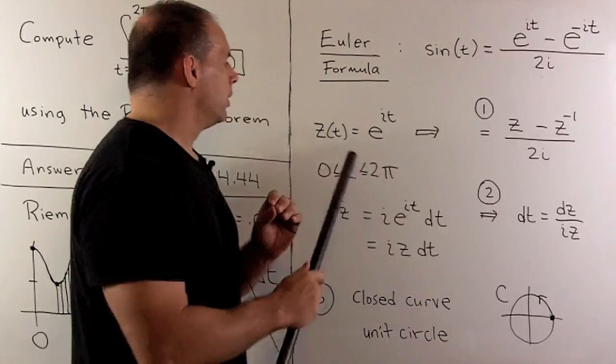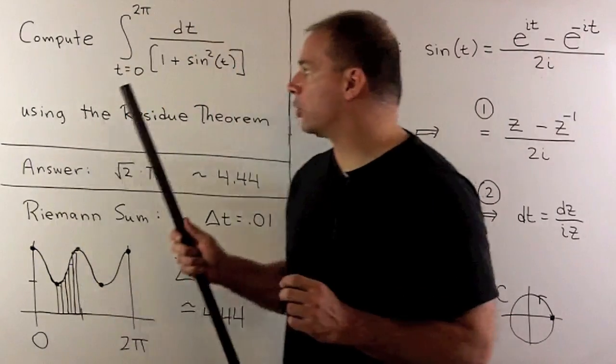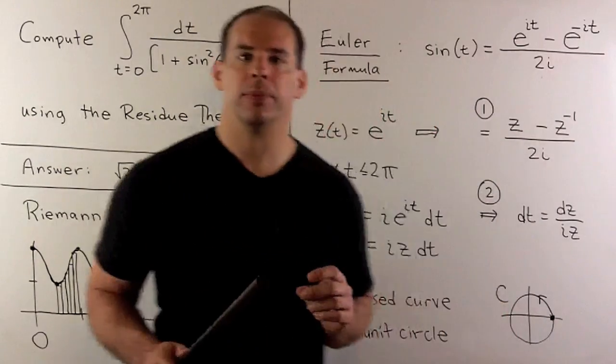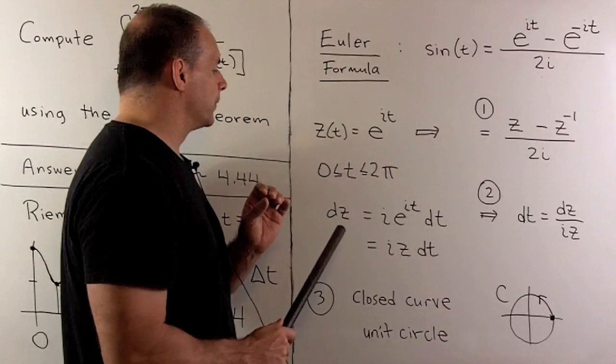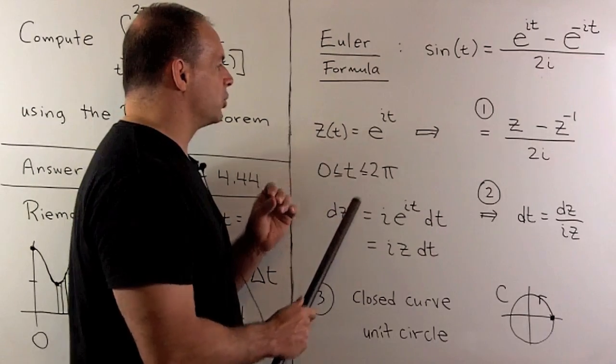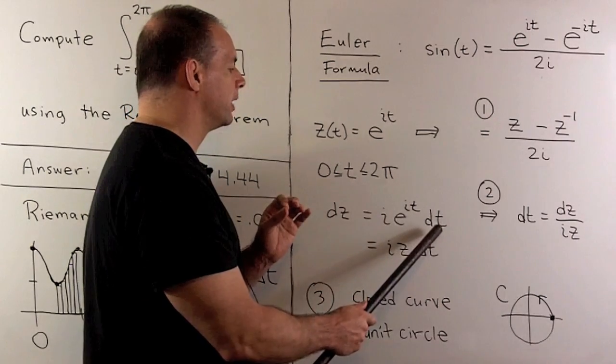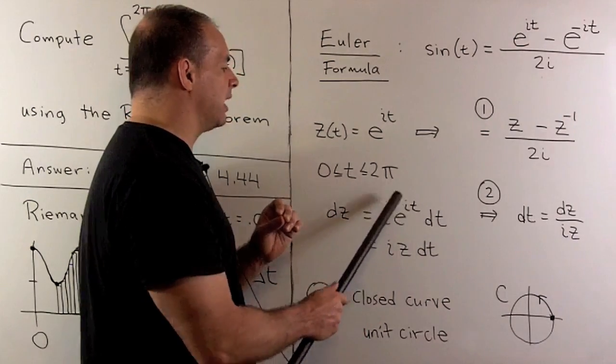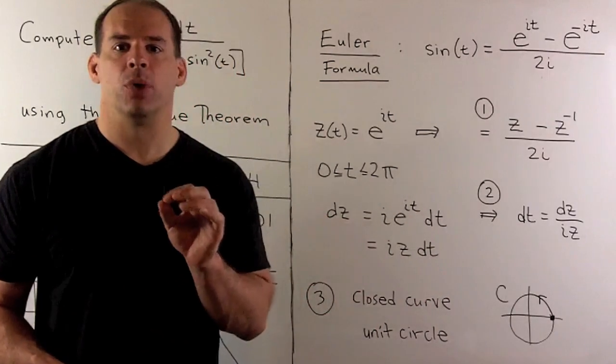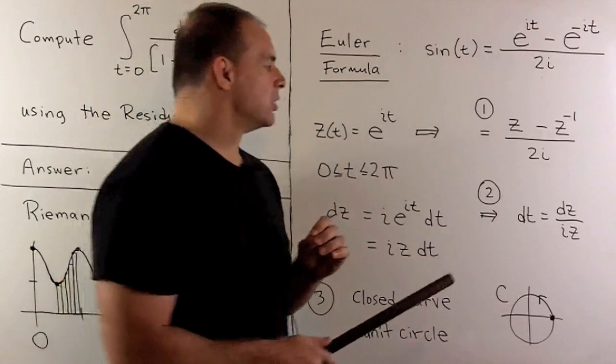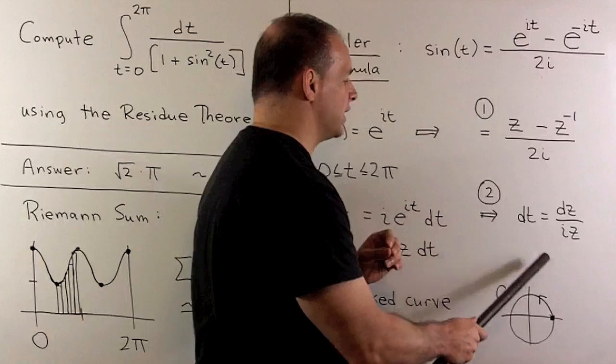If we use this parametrization, the limits on my integral are going from 0 to 2π. We'll need dZ. So, dZ, we're just going to take the derivative here with respect to t. We get i e to the it, dt. And then note, Z is equal to e to the it. So, we'll have that dt is equal to dZ over iZ. So, when I sub out dt, everything will be in terms of Z.